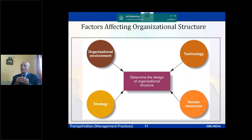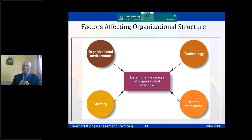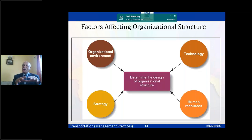When people are specialized, such as a legal unit where each person handles intellectual property, criminal, or other issues, the structure needs to reflect that specialization. Strategy also matters — whether you want people to interact together or work in silos, and whether results come through collaboration or independently, all determine the appropriate structure.